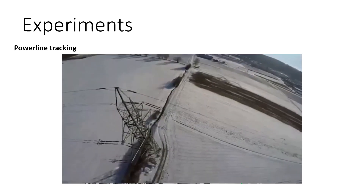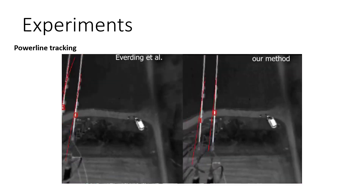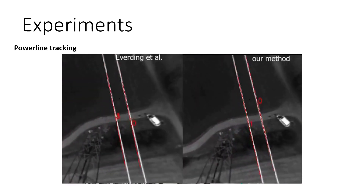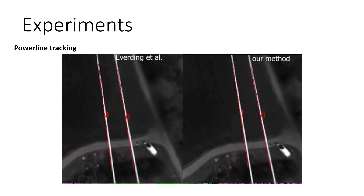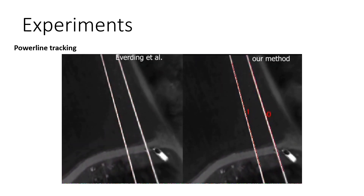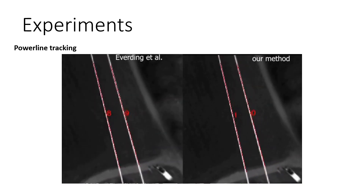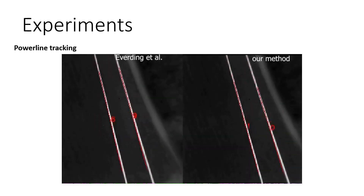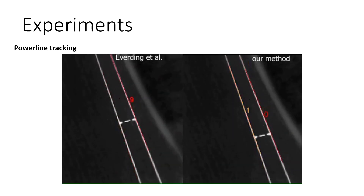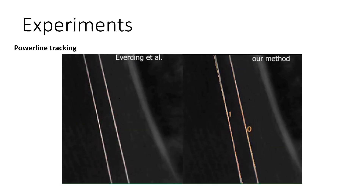This video shows a comparison of our method to a state-of-the-art spatiotemporal-based approach. From the ID of the line tracker, we can see that our method is more persistent than the state-of-the-art, which is very beneficial for power line tracking. Here, standard images are only used for visualization — the algorithm only uses events to detect and track the lines.